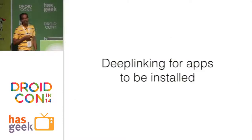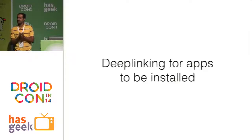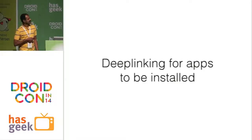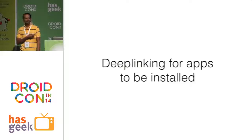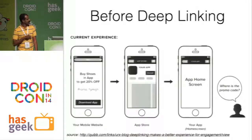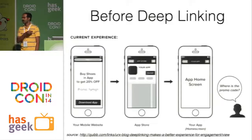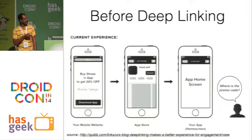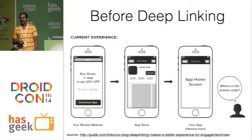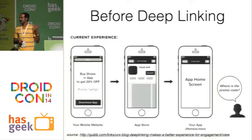Now let's get to the second scenario — how you can enable deep links for apps which are not yet installed, where you are driving the user to go and install your app. This technique is called deferred deep linking. Many times we give promo codes to users in a referral campaign: 'Click this link and get 25% discount.' The moment you do that, you are directed to Google Play, you download and install the app — but what do you see? Your home screen. The coupon is not there. That is a suboptimal user experience.